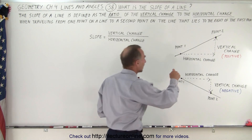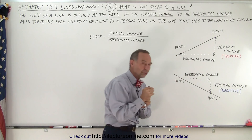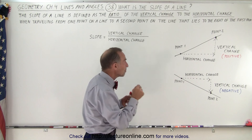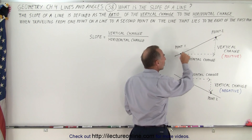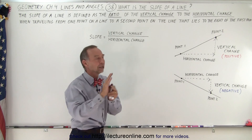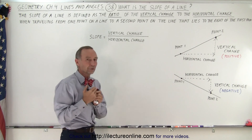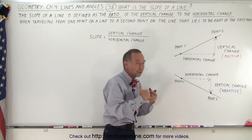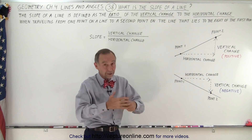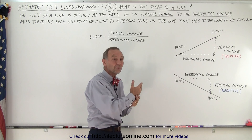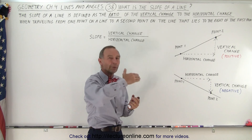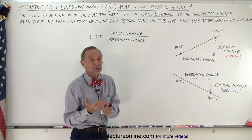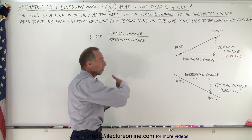When we try to determine the change in the vertical direction and change in the horizontal direction, we must travel from a point on the line to another point on the line, but that second point must lie to the right of the first point. This means the horizontal change will always be positive, because when we travel from left to right on the x-axis we always travel from a smaller number to a bigger number. So the change is always positive in the horizontal direction by definition.